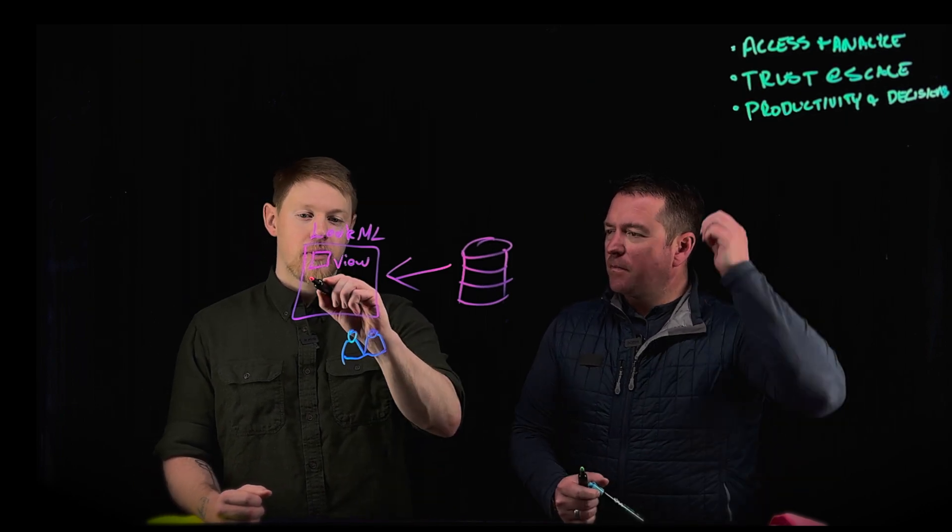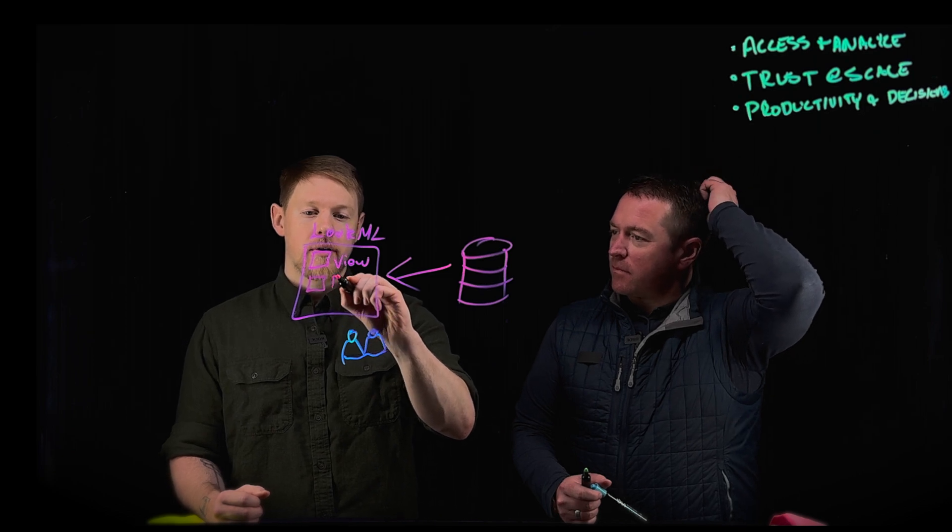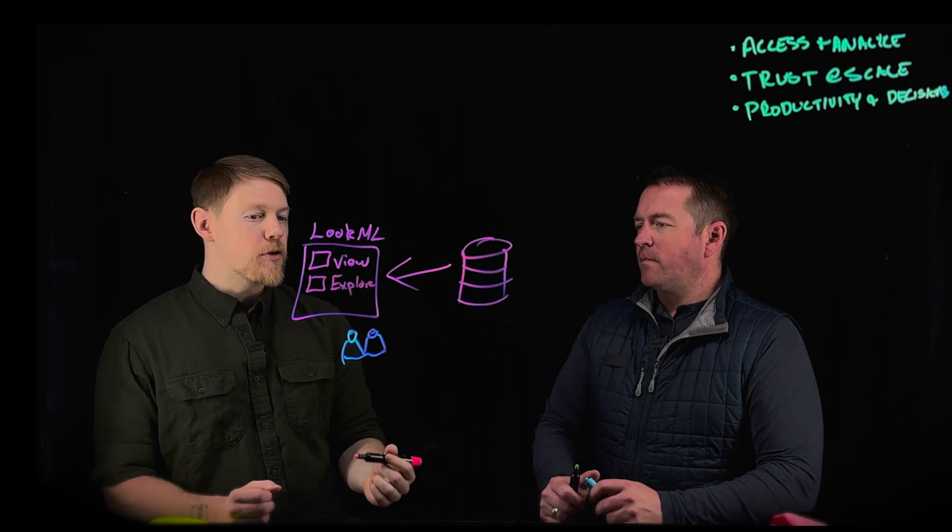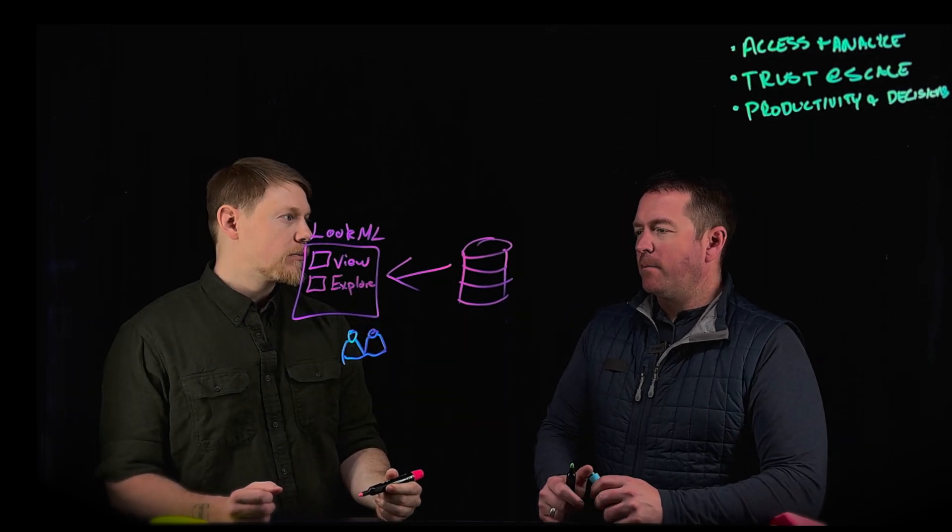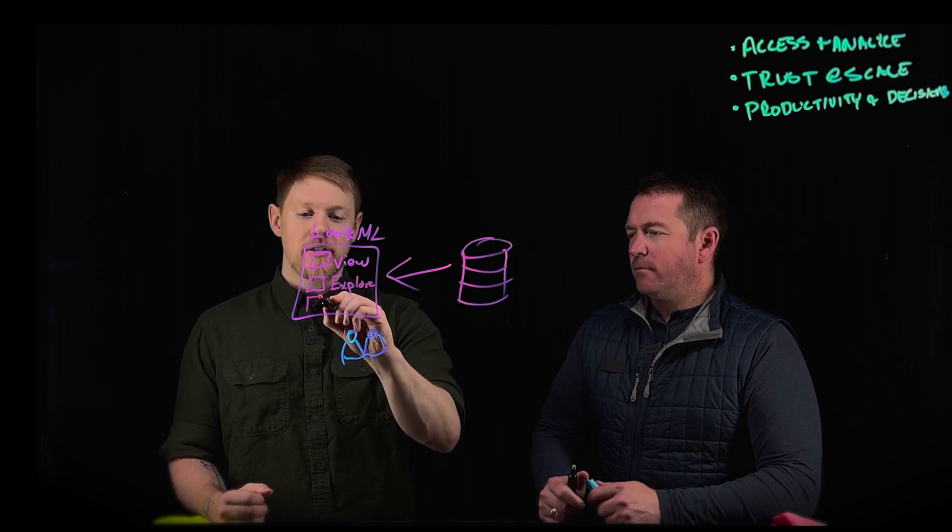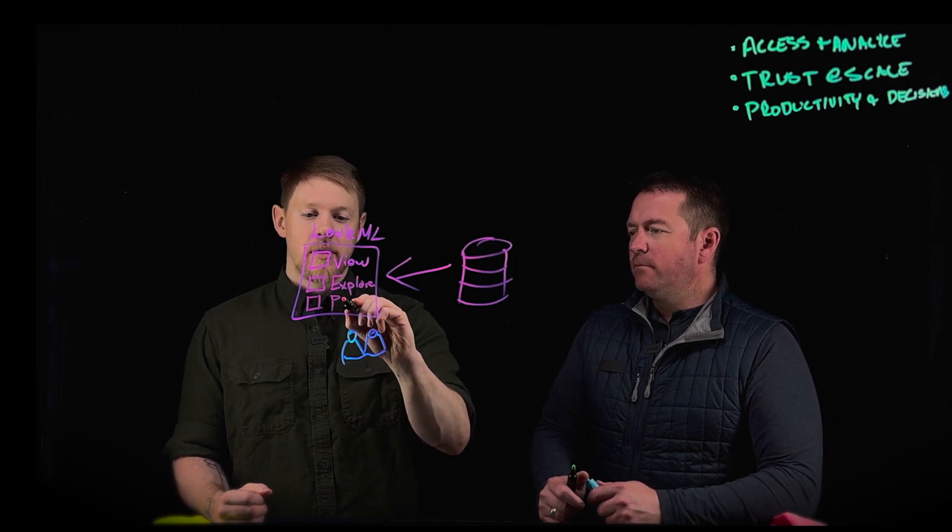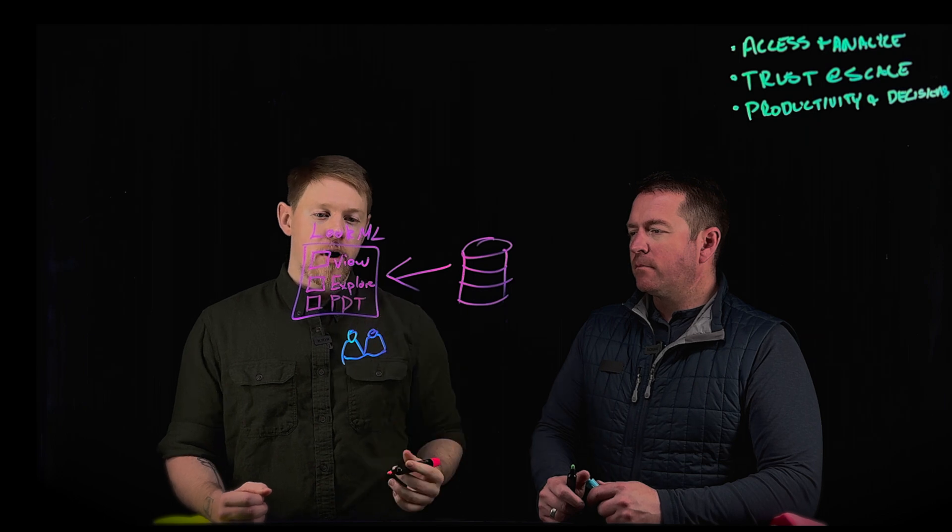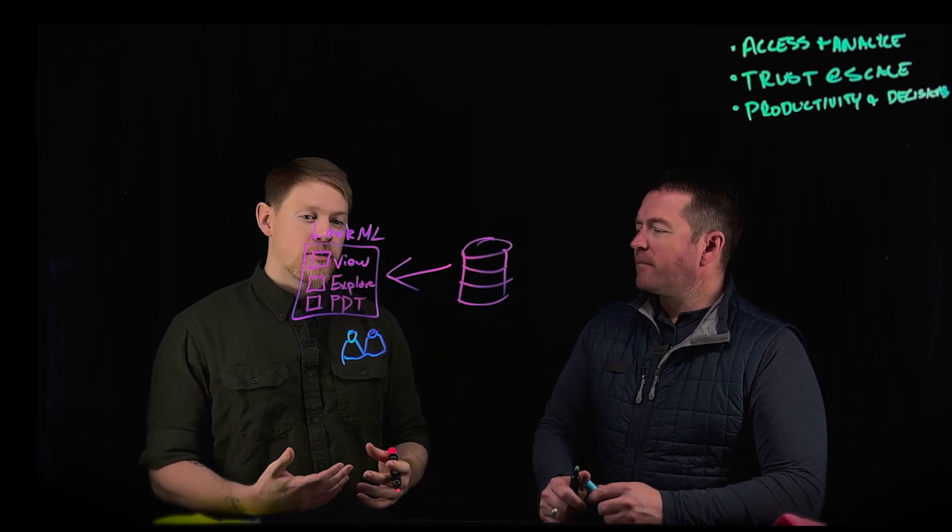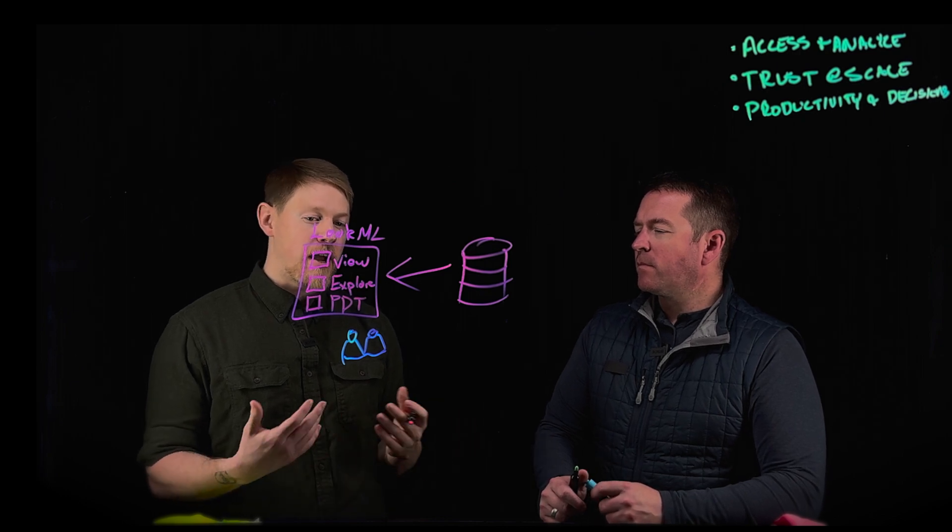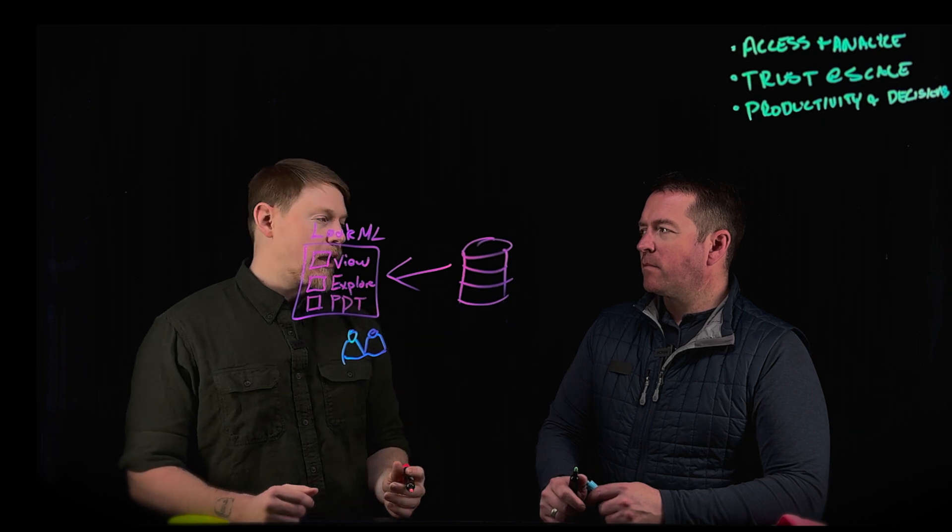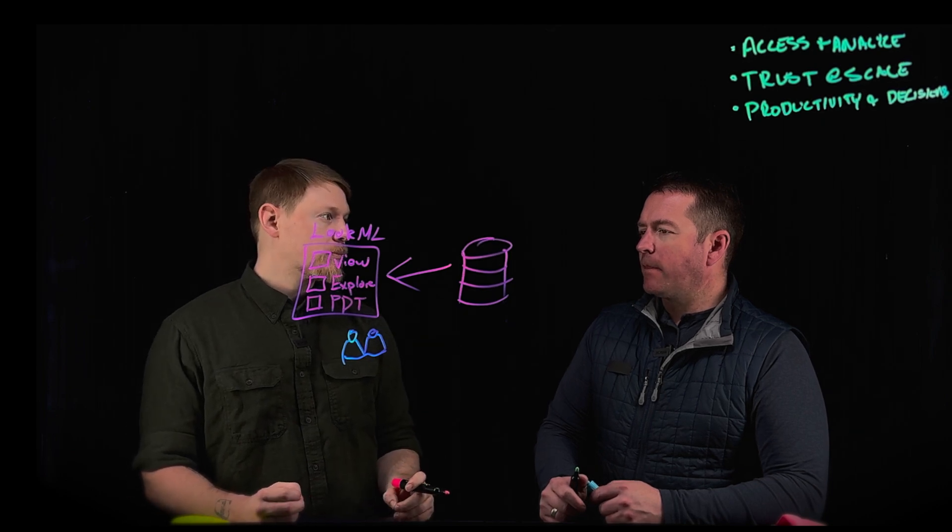Then from there, you're also going to have an explore, which defines the relationships between these view files that you've just created. Okay. And then there's a last component here called a persisted derived table, which handles the more complex stuff that might not be initially represented in your views, you know, sub selects, multi-level joins, aggregations of aggregations, window functions. Those really need to end up in their own file type.